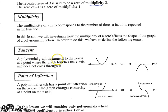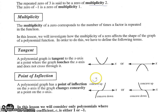A polynomial graph is tangent to the x-axis at a point where the graph touches the x-axis and does not cross through it — like where the graph comes down, touches the x-axis, and then goes back up. A polynomial graph has a point of inflection on the x-axis if the graph changes concavity at that point. If something's concave up, it has a happy face look; if it's concave down, it has a sad face look. So where the graph is concave down and then starts changing into concave up — that point where it changed is a point of inflection.